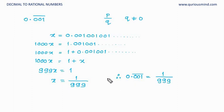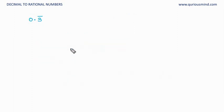Did you get this? We will take one more example and we will understand this better. Let us find 0.3 bar. Now we know the answer for this. Let us check whether we get the same answer. So first thing let us assume this as x. x is equal to 0.33 and so on.